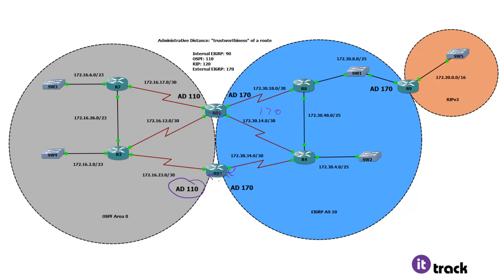By default, routers will never advertise a route they don't have in their own routing table — basically, if it's not good enough for them, they won't do anything with it. The same applies going the other way: routes redistributed from EIGRP into OSPF carry a default AD of 90 internally, so when OSPF routers learn them they assign AD 110. RD1 learns that route at 110 but won't re-advertise it back into EIGRP because it already has it at AD 90. So with just OSPF and EIGRP, even with multiple redistribution points, you won't have a routing loop problem.